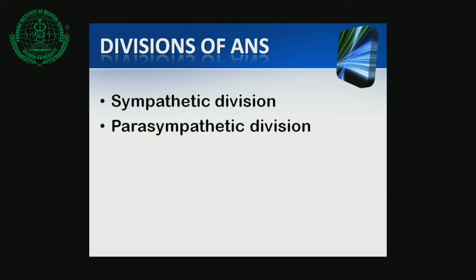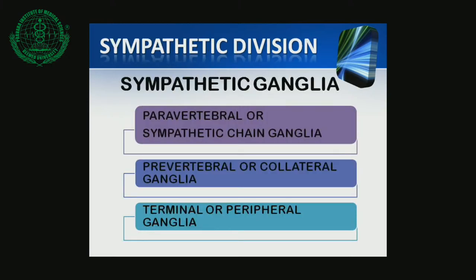The Sympathetic Division has Sympathetic Ganglia, which are divided into three groups: the Paravertebral group or Sympathetic Chain, the Prevertebral group or Collateral Ganglia, and third, the Terminal or Peripheral Ganglia.